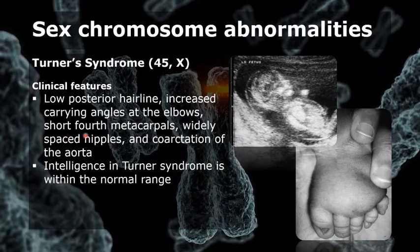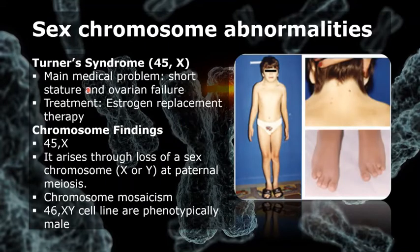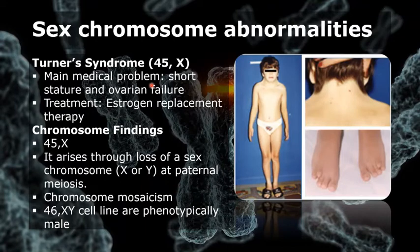Additional features include short fourth metacarpals, widely spaced nipples, and coarctation of the aorta. Intelligence in Turner syndrome is within the normal range. The two main medical problems are short stature and ovarian failure. Short stature becomes apparent by mid-childhood, and without growth hormone treatment, the average adult height is only 145 centimeters.